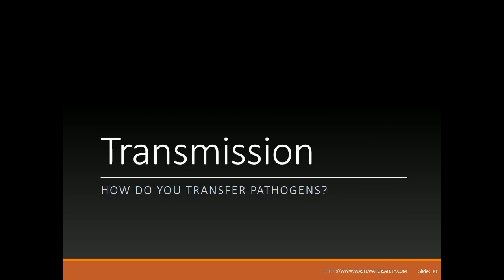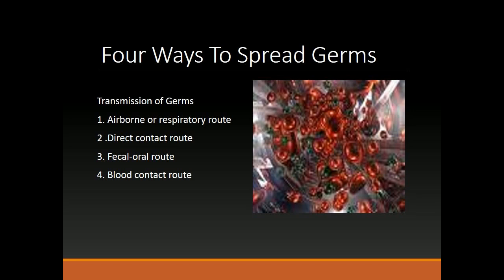Transmission — how do you transfer pathogens? There are four ways to spread germs: 1. Airborne or respiratory route. 2. Direct contact route. 3. Fecal-oral route. 4. Blood contact route.